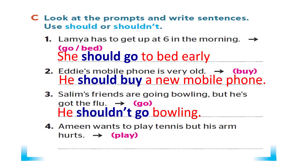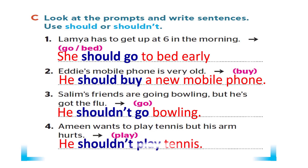Ameen wants to play tennis but his arm hurts — we can say he should rest. The prompt verb here is 'play', so: he shouldn't play tennis, he shouldn't play.